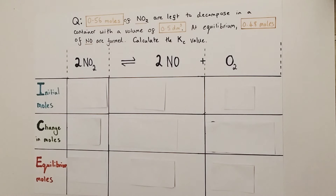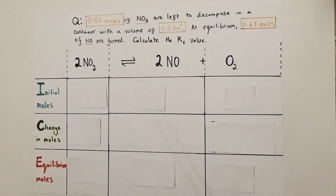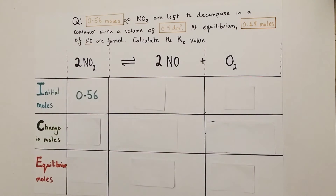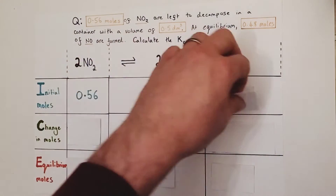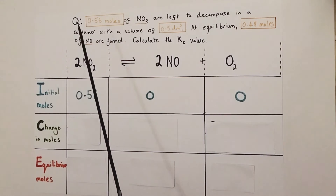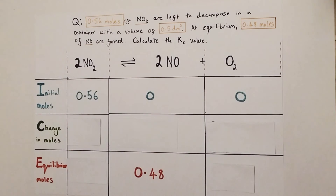For the initial moles, we've been told we had 0.56 moles of nitrogen dioxide. They haven't told us anything about nitrogen monoxide and oxygen, so we assume they're both zero — they haven't been formed yet at the start of this reaction. We have 0.56 moles of nitrogen dioxide and zero moles of nitrogen monoxide and oxygen present. Scanning the question, we find the equilibrium moles for nitrogen monoxide is 0.48, so we write that into our table.